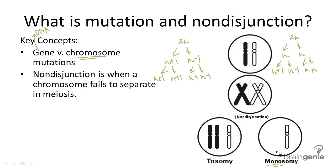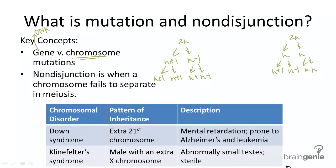The two most common examples are Down syndrome and Klinefelter syndrome, and they're both examples of trisomy because they both have an extra added chromosome. Down syndrome is caused by an extra 21st chromosome, and Klinefelter syndrome is caused by an extra X chromosome within a male genome. As you can see from the descriptions, they're both really serious disorders. Down syndrome involves intellectual disability and individuals are more prone to Alzheimer's and leukemia. In Klinefelter syndrome, males have abnormally small testes and can be born sterile.